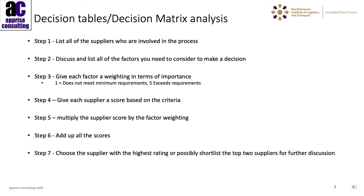One, for doesn't meet minimum requirements, and five, where that particular factor exceeds our requirements. Step four, we give each supplier a score based on the criteria. In step five, we multiply the supplier score by the factor weighting. Step six, we add up all of the scores. And in step seven, we choose the supplier with the highest rating, or maybe we shortlist the top two suppliers for further discussion.